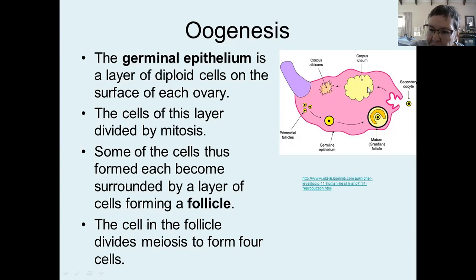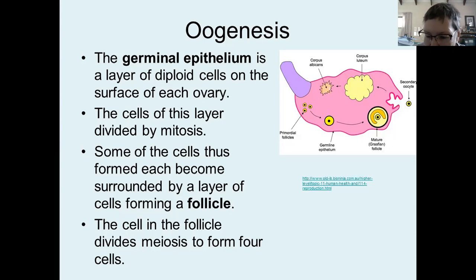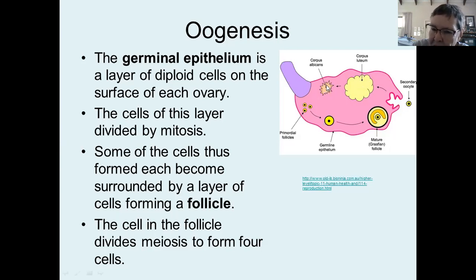The remnants of that follicle swell and become yellow in color, and they are called the corpus luteum — which means 'yellow body.' The corpus luteum is terribly important because it secretes hormones that are essential in maintaining pregnancy. If the egg becomes fertilized, the corpus luteum will remain and carry on secreting those hormones for about the first 12 weeks of pregnancy. If the egg doesn't become fertilized, the corpus luteum disintegrates, the female menstruates, and the following month the whole process starts again.